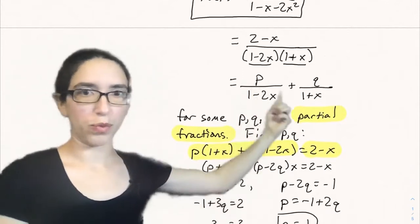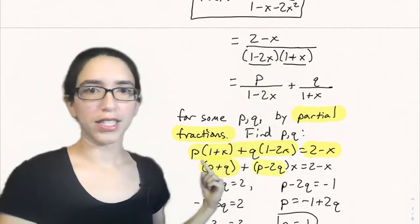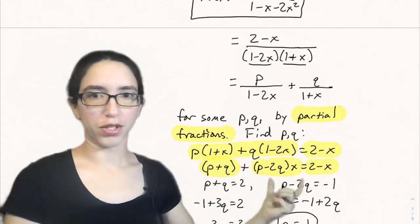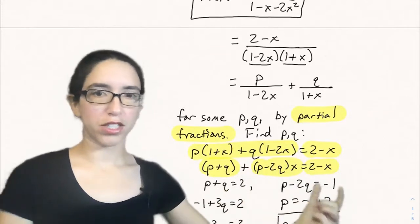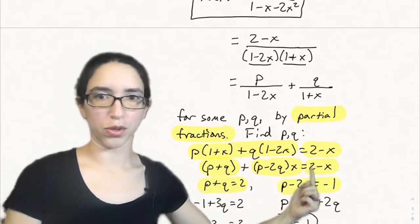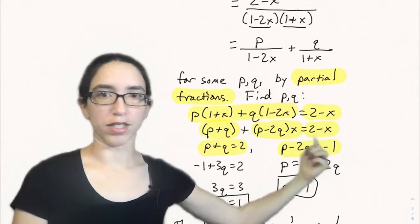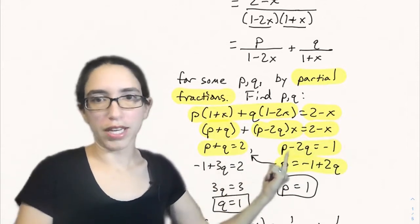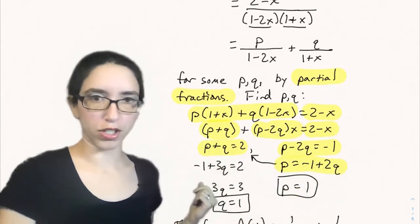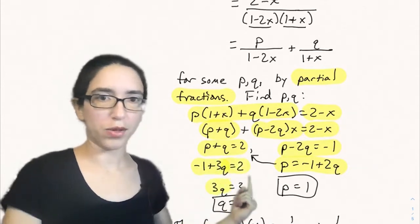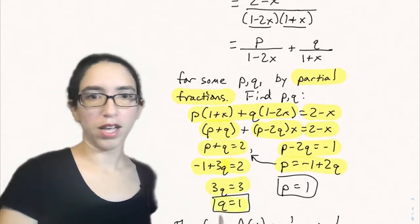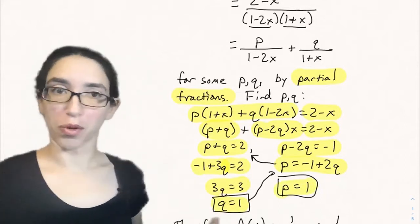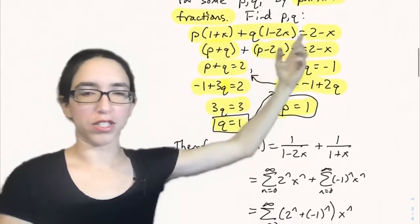To find p and q using partial fractions, when we add these fractions together we need 2 minus x on top. So p times (1 plus x) plus q times (1 minus 2x) equals 2 minus x. Combining like terms: (p plus q) plus (p minus 2q)·x equals 2 minus x. Two generating functions are equal if and only if their coefficients are equal, so p plus q equals 2 and p minus 2q equals negative 1. Solving: p equals negative 1 plus 2q, substituting gives negative 1 plus 3q equals 2, so q equals 1. Plugging back in gives p equals 1 as well.